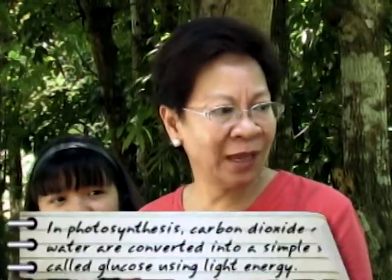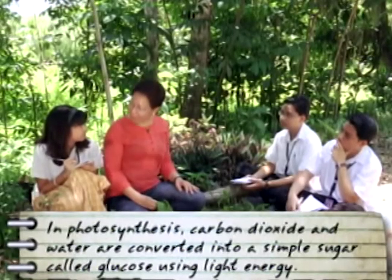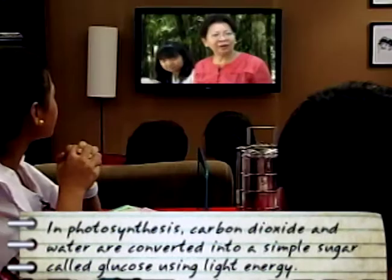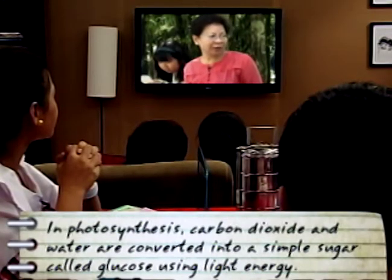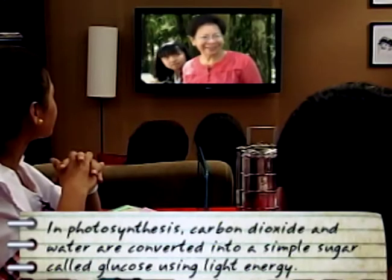How does this process provide food for plants? In photosynthesis, carbon dioxide and water are converted into a simple sugar called glucose using light energy.